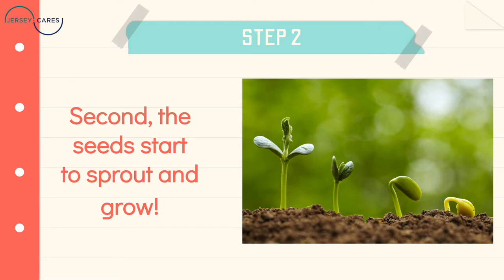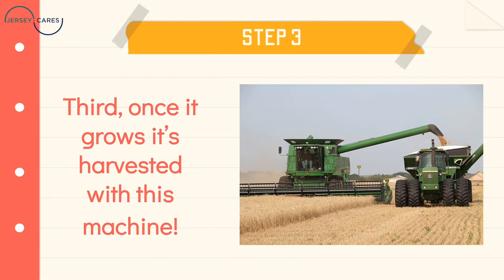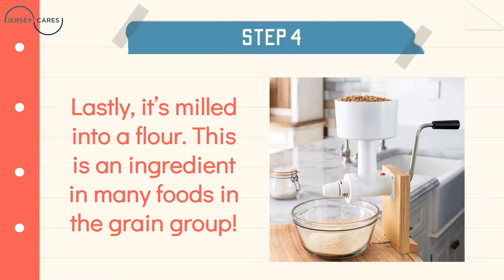For step three, once it grows, it's harvested. Harvested means to gather the crop. In this picture you can see a big machine is used to harvest a lot of crops at once. For step four, lastly, it's milled into a flour, which is the ingredient in many foods in the grains group.